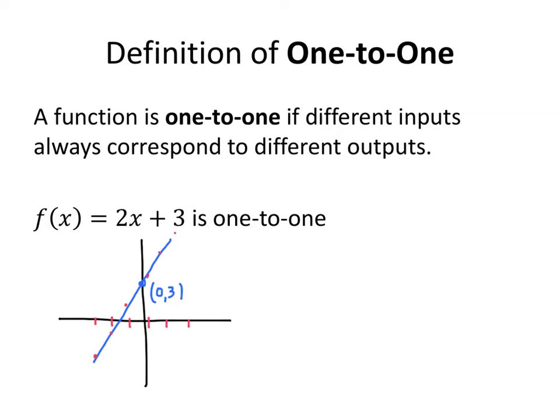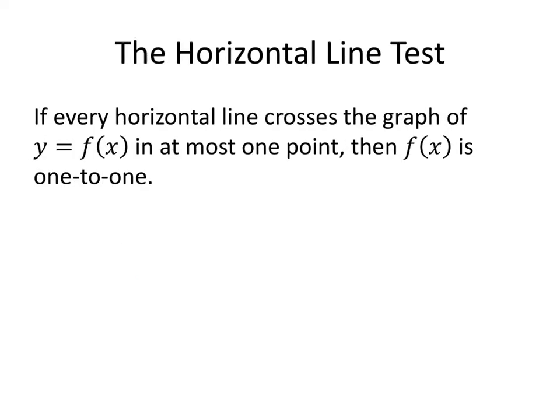So this gives us a way to graphically tell whether or not the graph of a function represents a function that's one-to-one. And this is something called the horizontal line test. And it says that if every horizontal line crosses the graph of your function in at most one point, then your function is one-to-one.